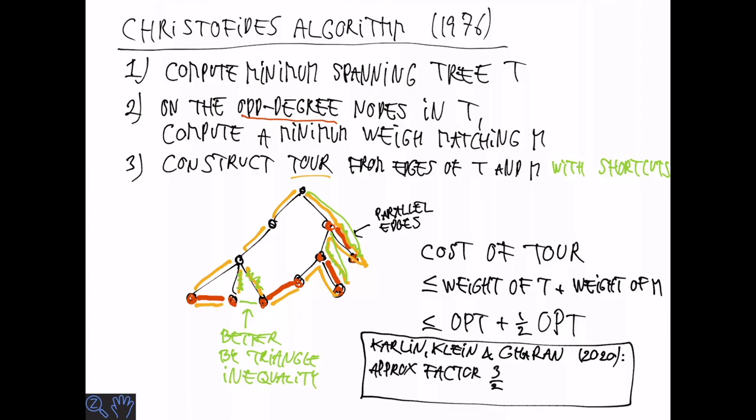So specifically, they get an approximation factor which is smaller than three-halves by some epsilon, which is greater than 10 to the minus 36. So a tiny improvement, but it shows that three-half is not the best.